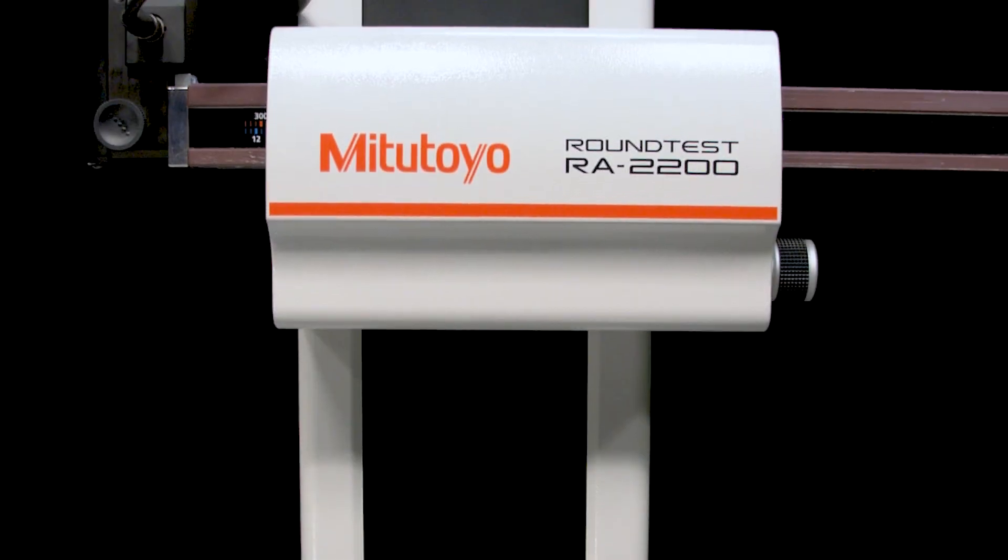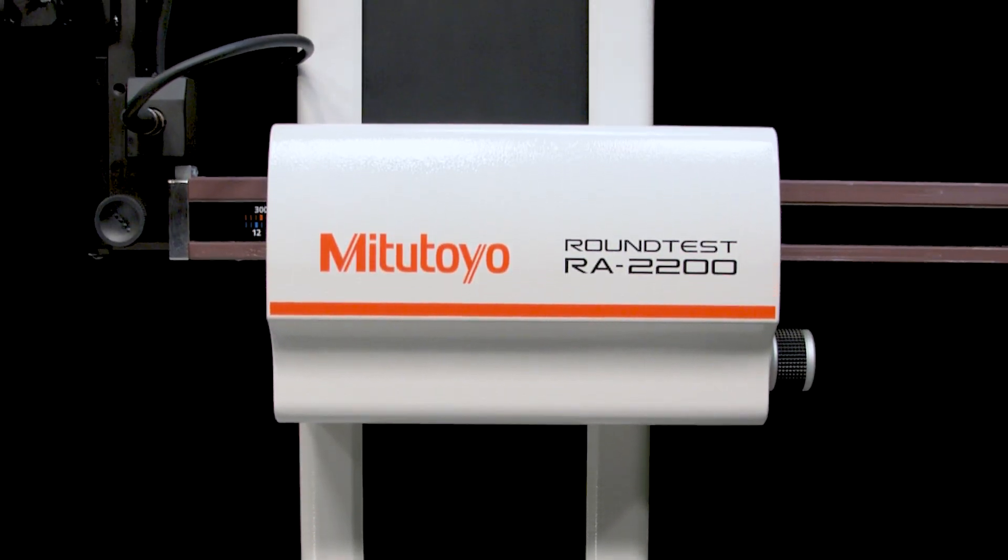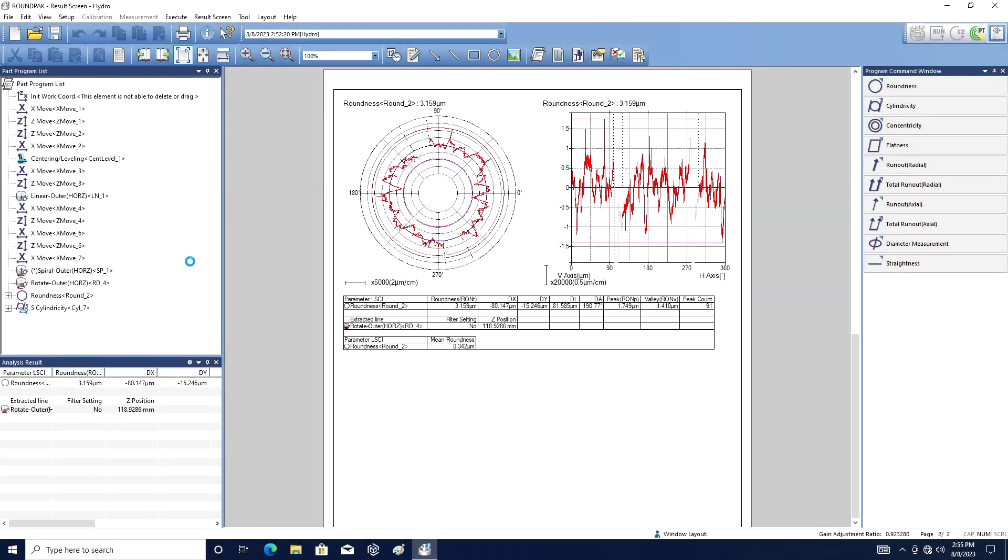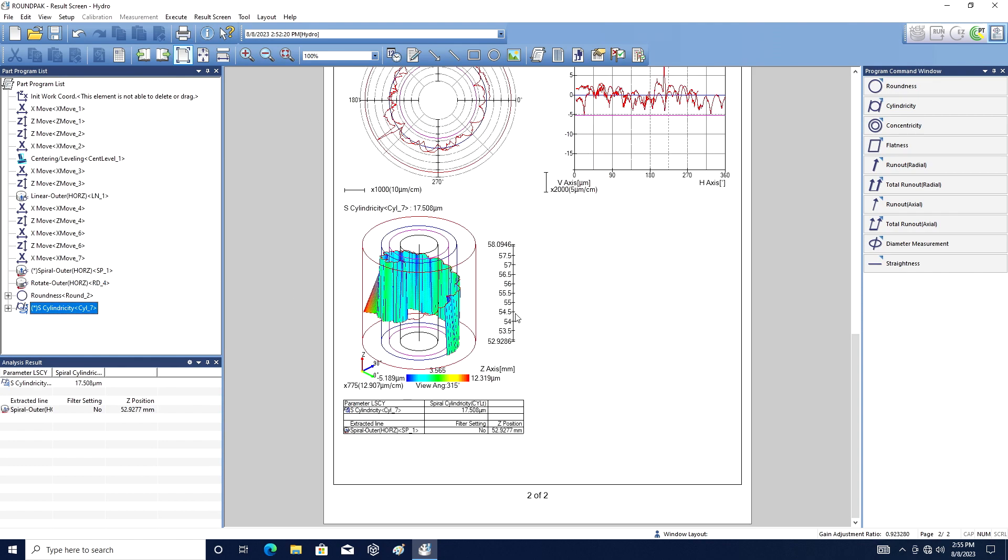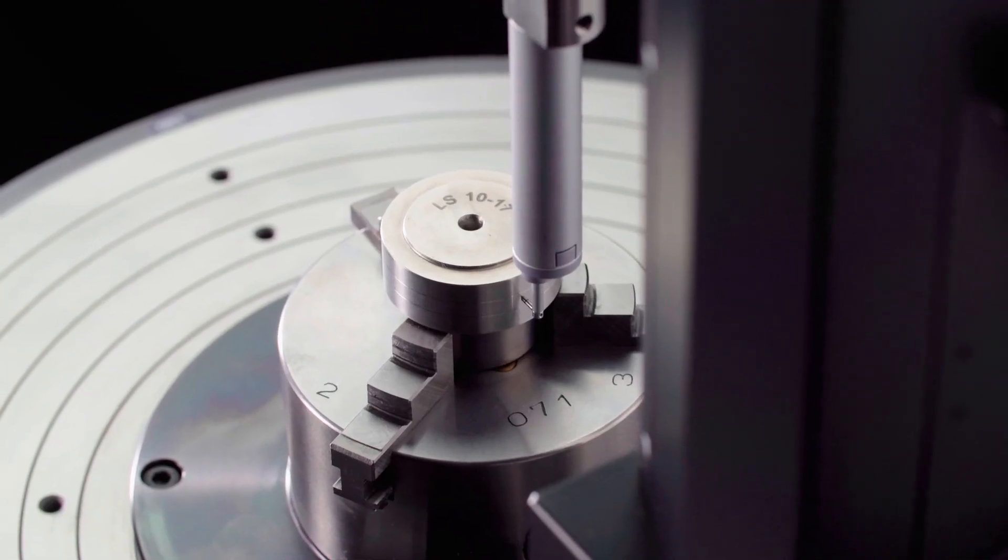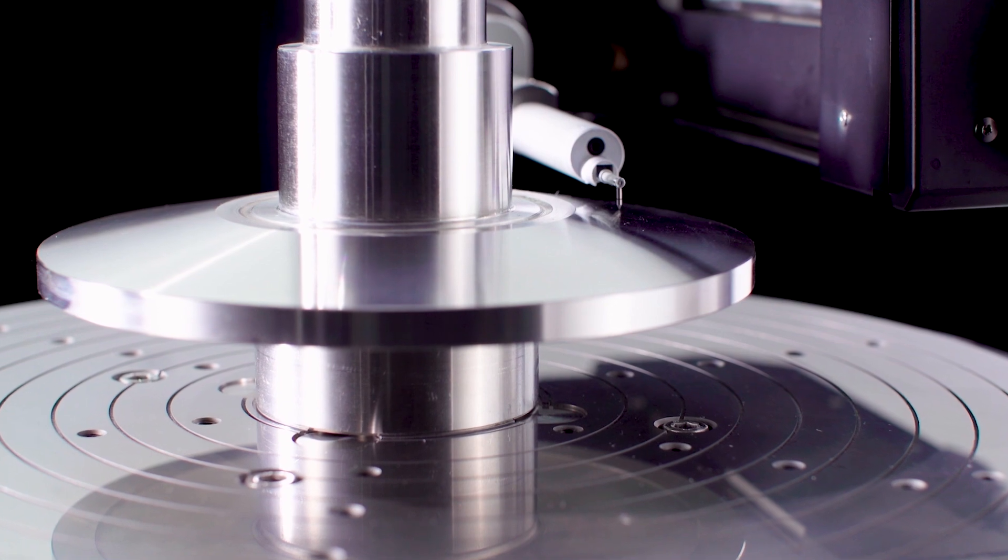The RA2200 sets a new standard in the field of form measurement with its capability of performing advanced analysis and demonstrating its unique capability to add a surface roughness detector.